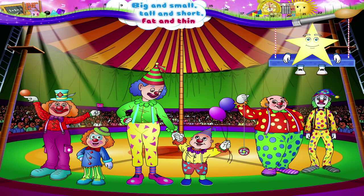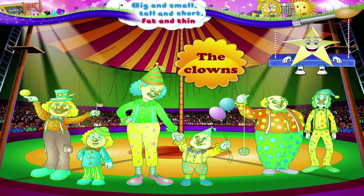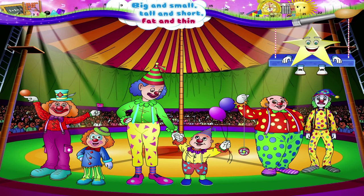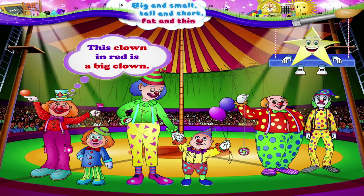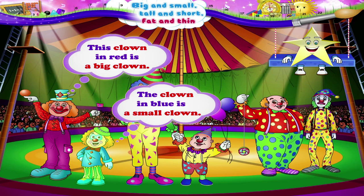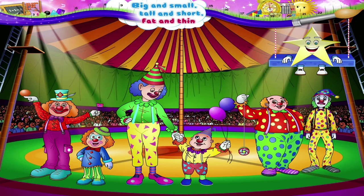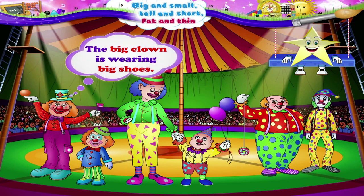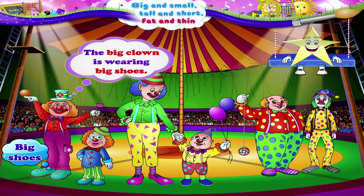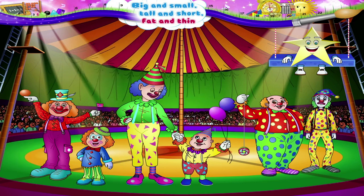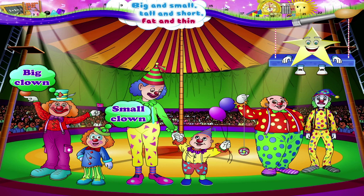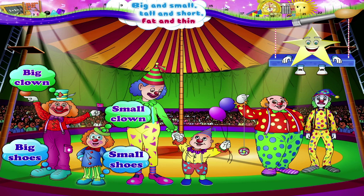Here we are inside the big tent, just in time to see the clowns. Starry, have you noticed all the clowns look different? This clown in red is a big clown, while the clown in blue is a small clown. Aren't they funny, Starry? The big clown is wearing big shoes, and the small clown is wearing small shoes.